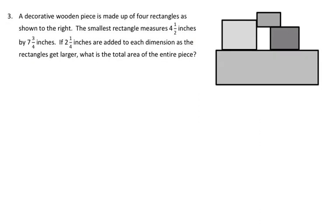Now let's look at homework problem number 3. There's a picture that goes along with it. It says: A decorative wooden piece is made up of four rectangles, as shown to the right. The smallest rectangle measures four-and-a-half inches by seven-and-three-fourths inches. If two-and-one-fourths inches are added to each dimension as the rectangles get larger, what is the total area of the entire piece? I'm going to label these rectangles A, B, C, D.